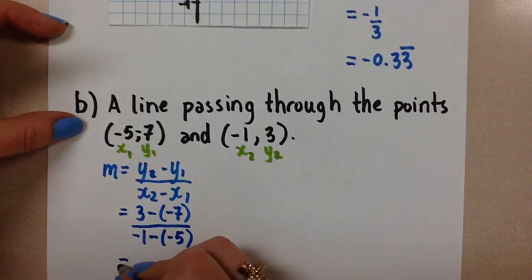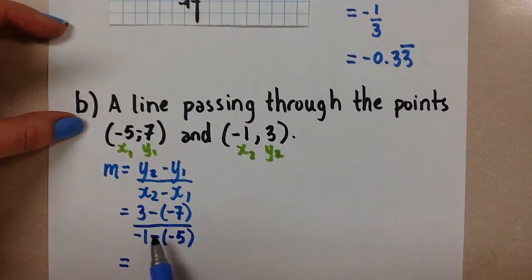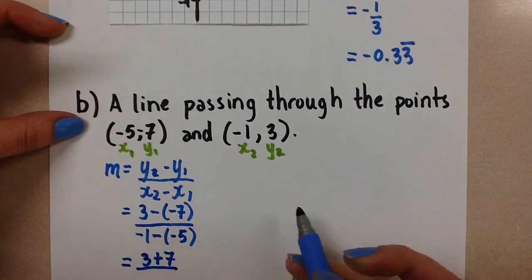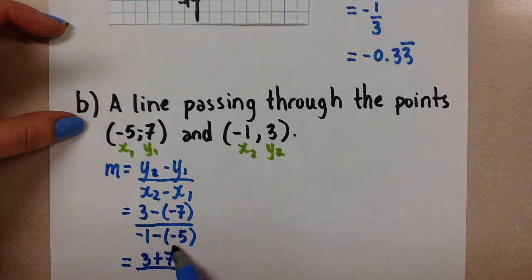So if we look at the negative values here, 3 minus negative 7 is the same thing as 3 plus 7, we think about our integers. Over negative 1 minus negative 5 is the same thing as negative 1 plus 5, like this.